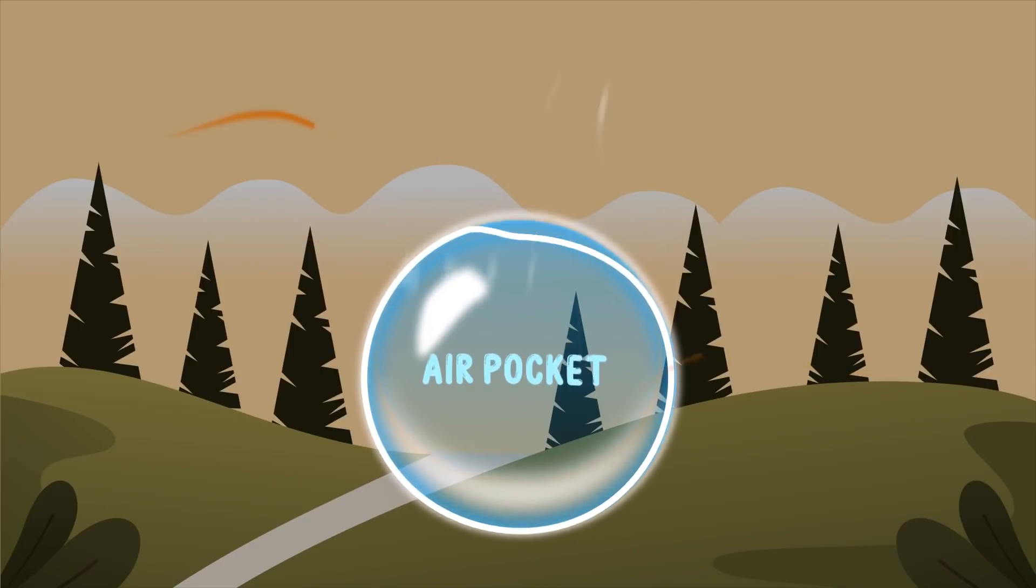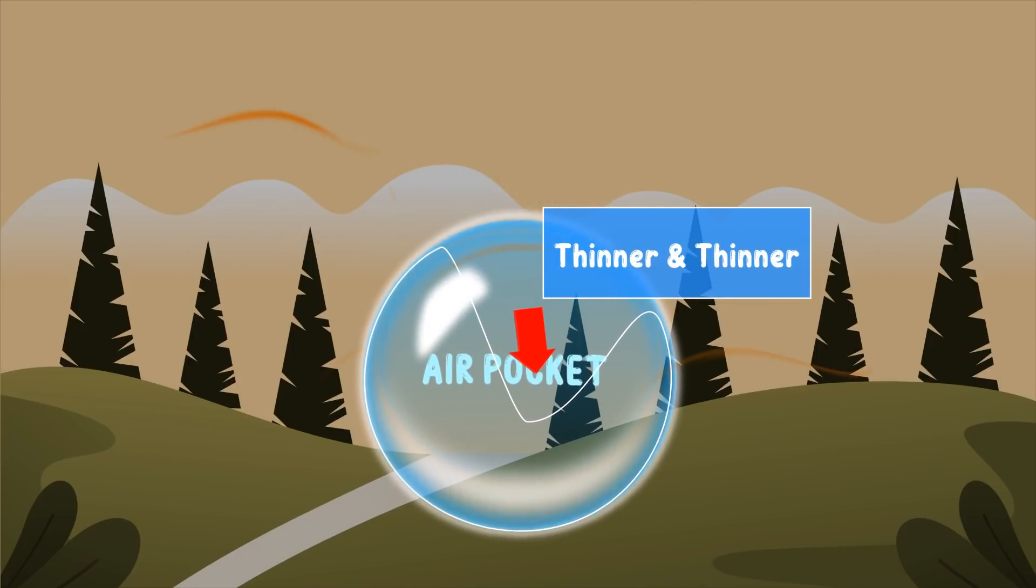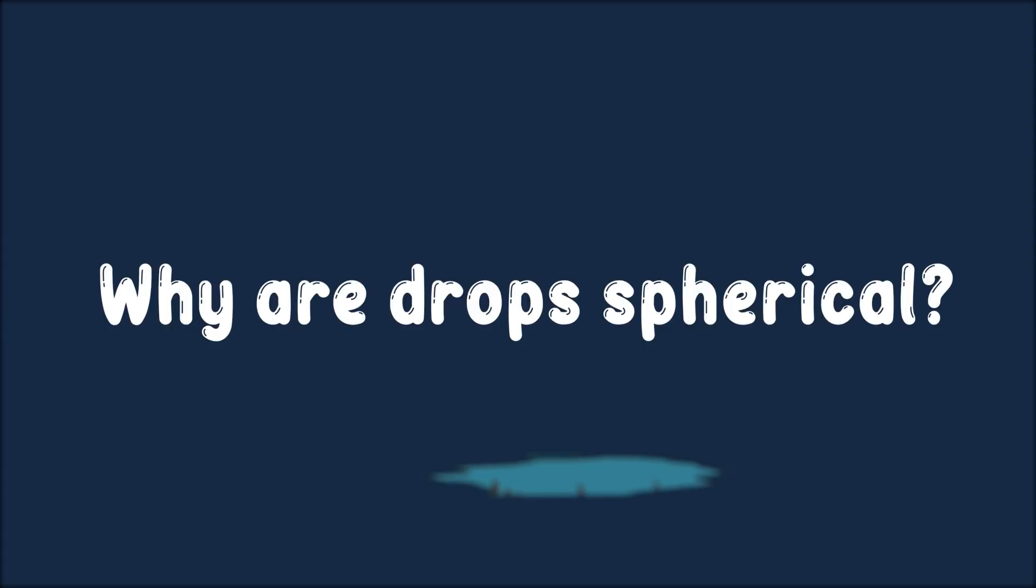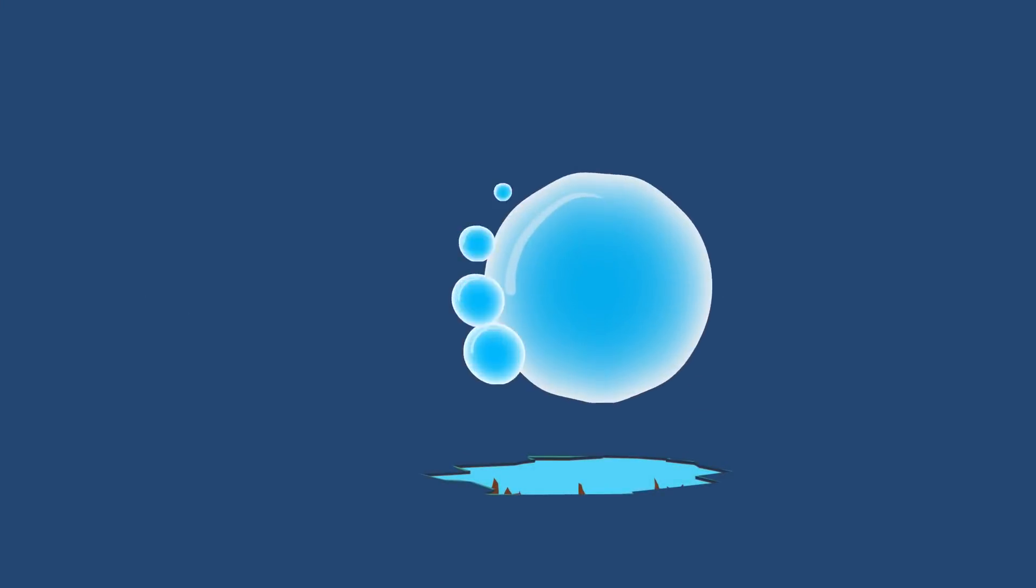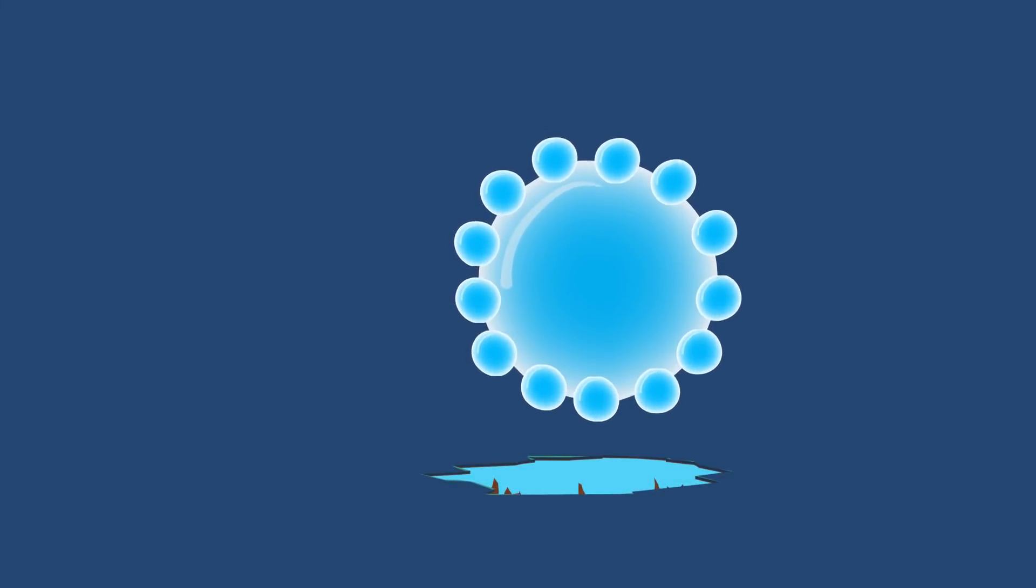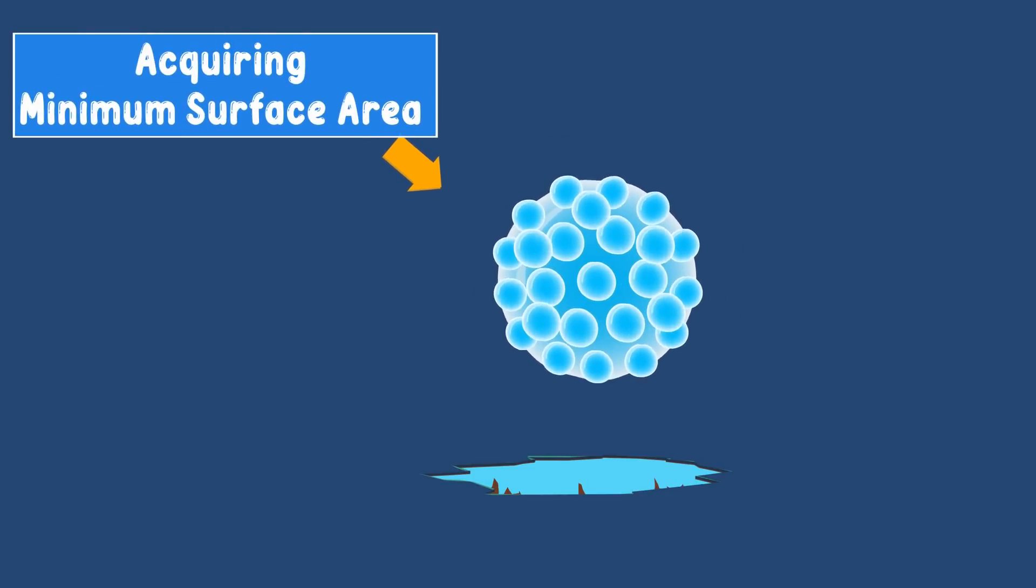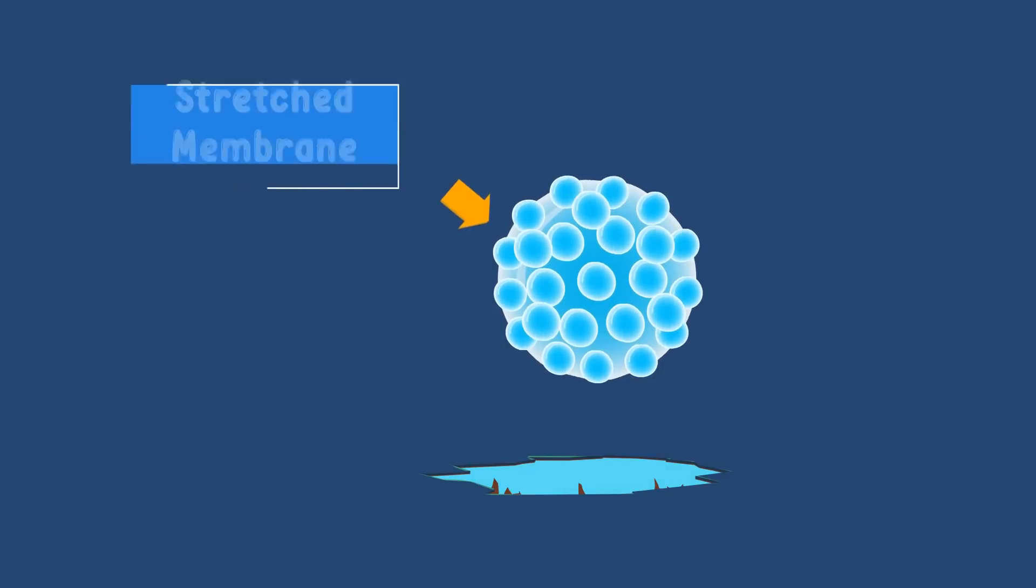Why are drops spherical? It is because of surface tension. Surface tension is the property of liquids by which surface molecules of a liquid try to hold the liquid together by acquiring minimum surface area and acting like a stretched membrane.